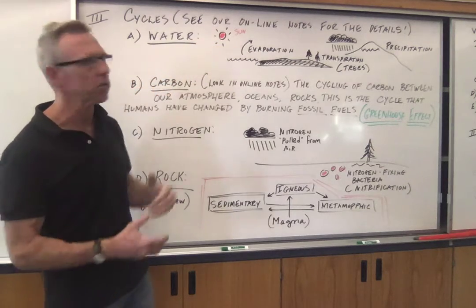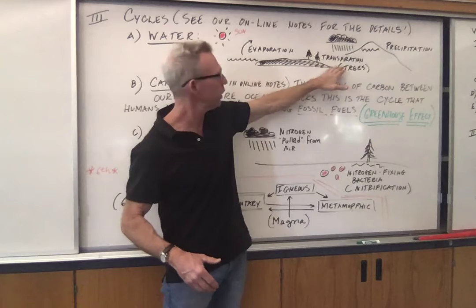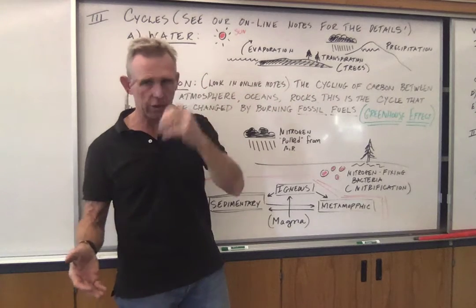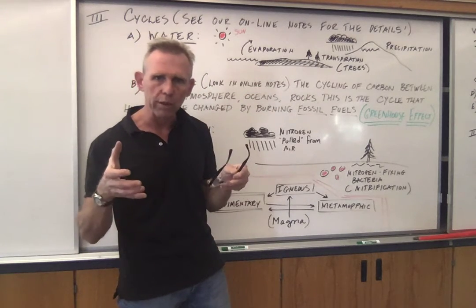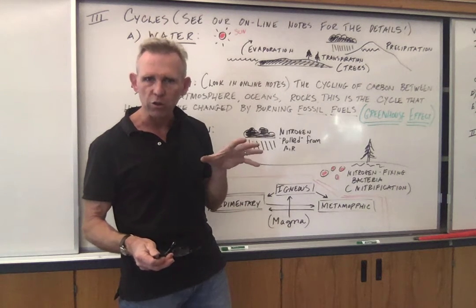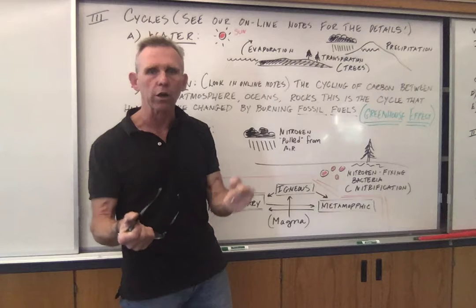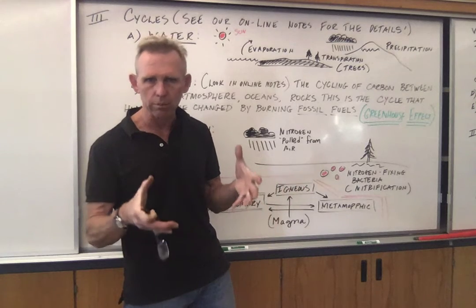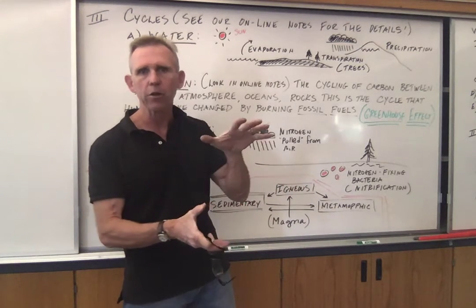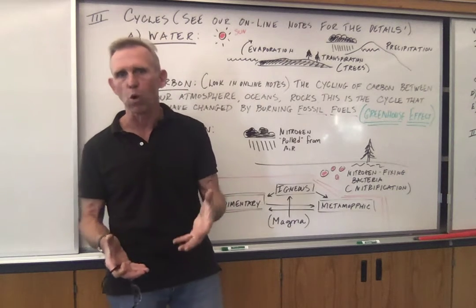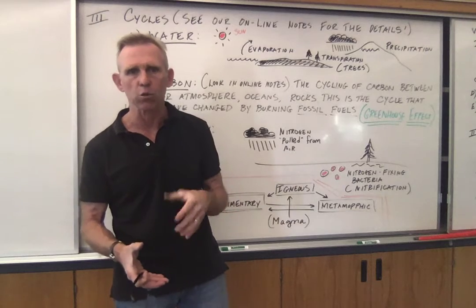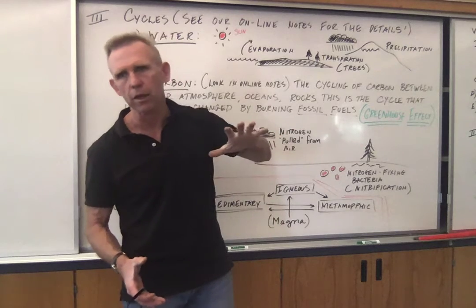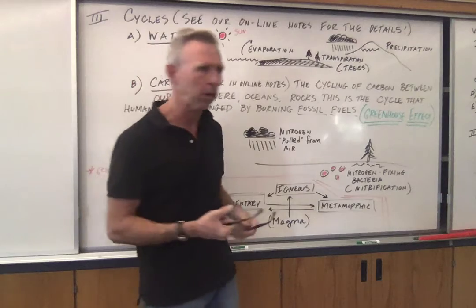The water cycle is mainly driven by the sun. You've got evaporation, transpiration from trees, and precipitation — snow, sleet, hail, rain. One thing that's on your online notes is the aquifer, which is where we keep groundwater. This is very important in central California, where groundwater is pumped out in wells for irrigation on farms. Sometimes aquifers get overused — there are places in the Central Valley where over-pumping is causing the ground to actually sink. Also, in terms of fracking, that's where water and chemicals are pumped into the ground to force oil out.